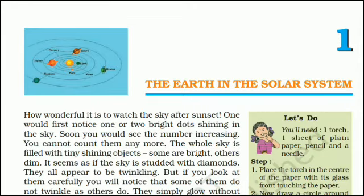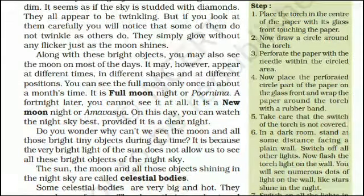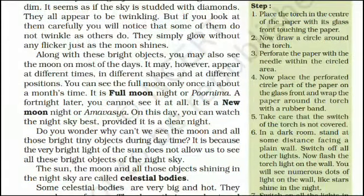But if you look carefully, you will notice that some of them do not twinkle as others do. They simply glow without any flicker, just as the moon shines. Along with these bright objects, you may also see the moon on most days. It may appear at different times, in different shapes and at different positions. You can see the full moon only once in about a month's time.